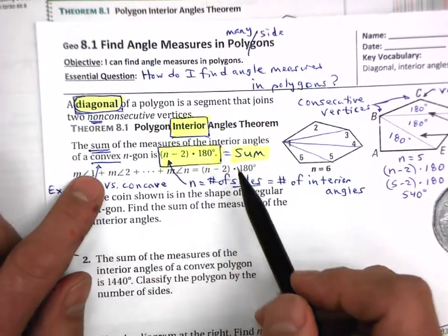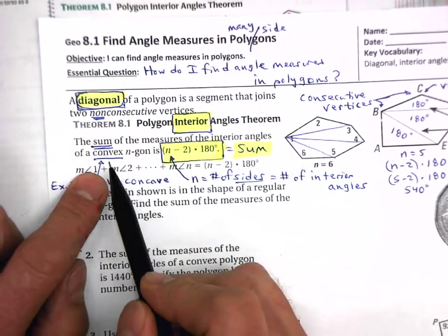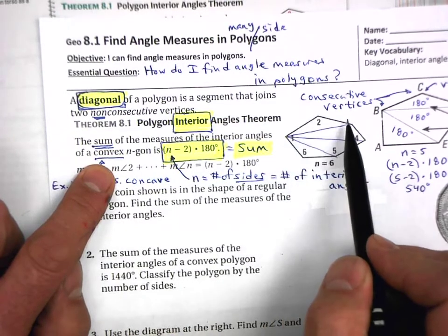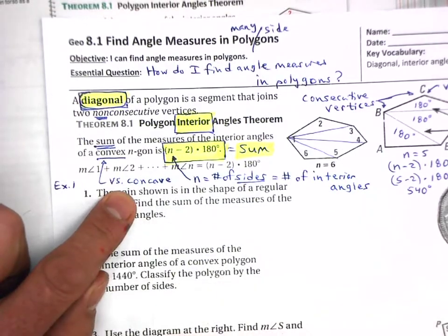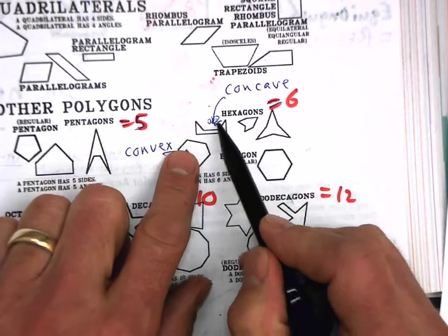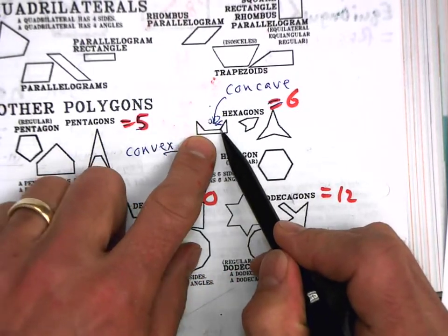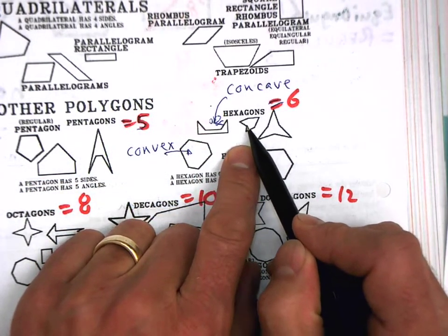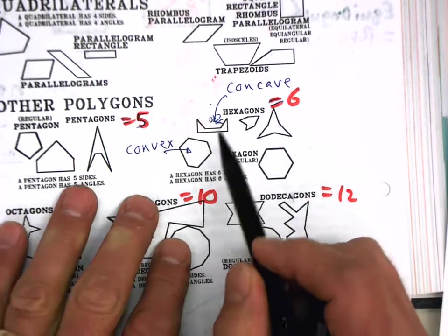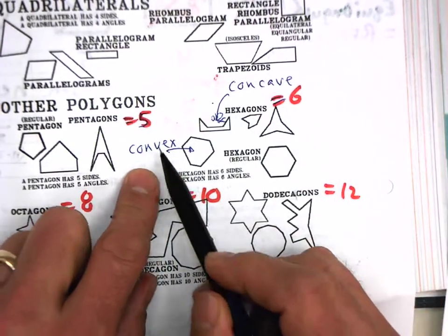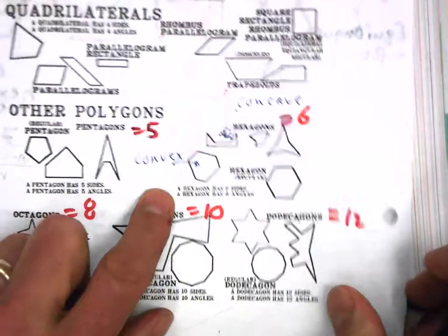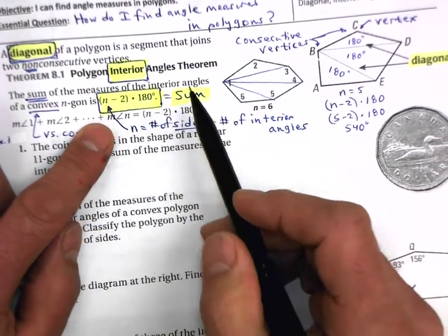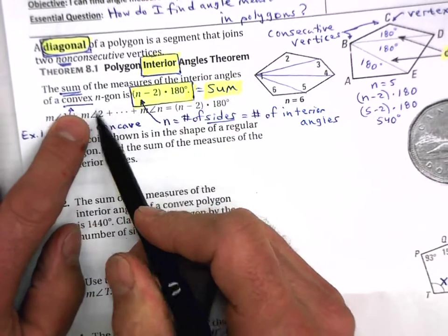In order for this formula to work, the polygon has to be convex — meaning each of the vertices is pointing out. It cannot be concave. Concave is when a vertex points in. For example, this polygon here is concave because two of its vertices happen to be pointing inward. Here's another concave polygon where one vertex is poking in. Concave is in contrast to convex, where each of the vertices points out.